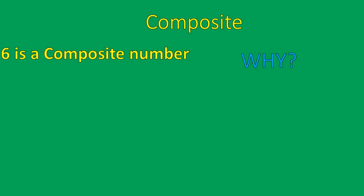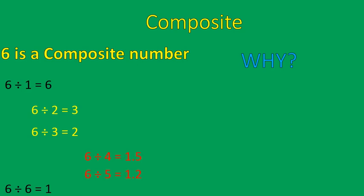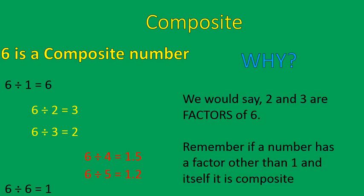Let's take a look at some composite numbers. Six is a composite number. Why? Because when you divide six by two and by three, you also get nice even numbers. Two and three are factors of six. If a number has a factor other than one and itself, it's composite. So that's the basics of composite versus prime.